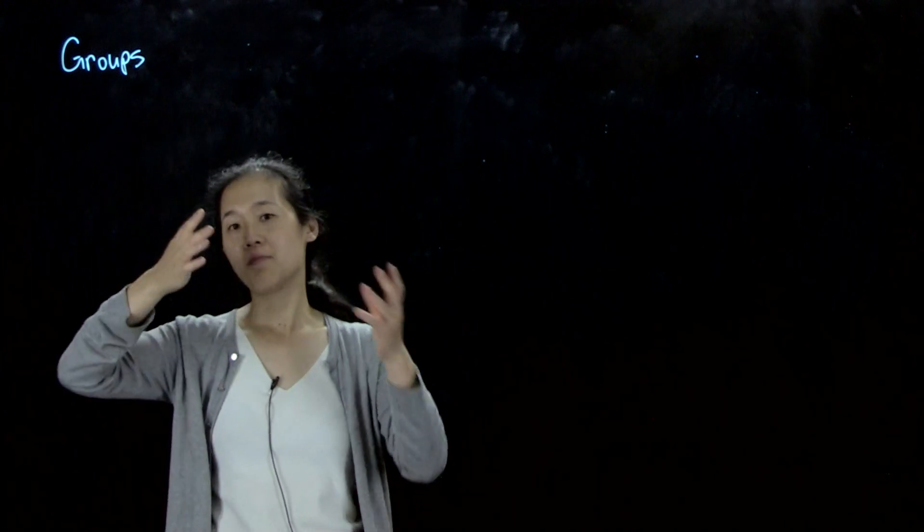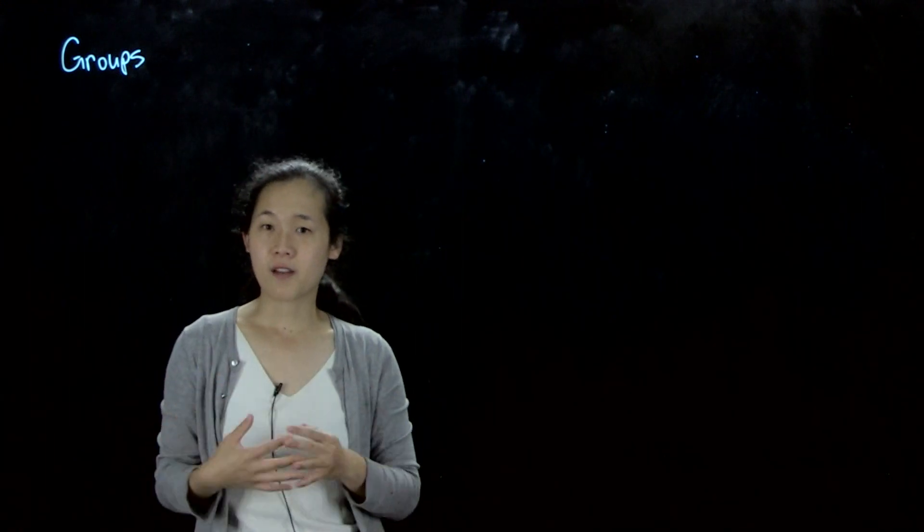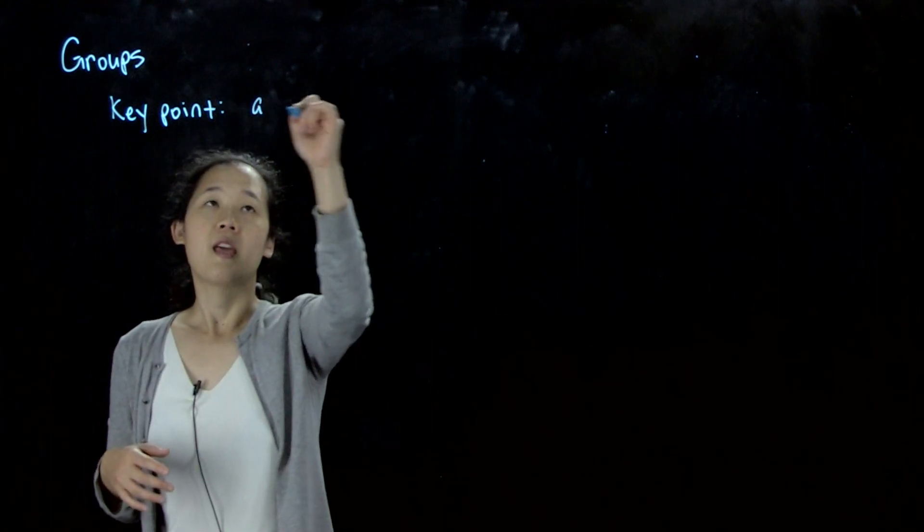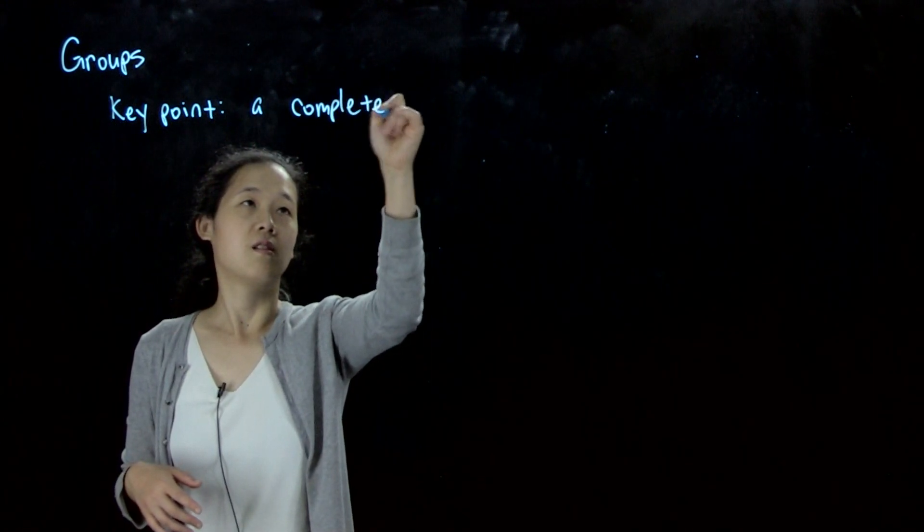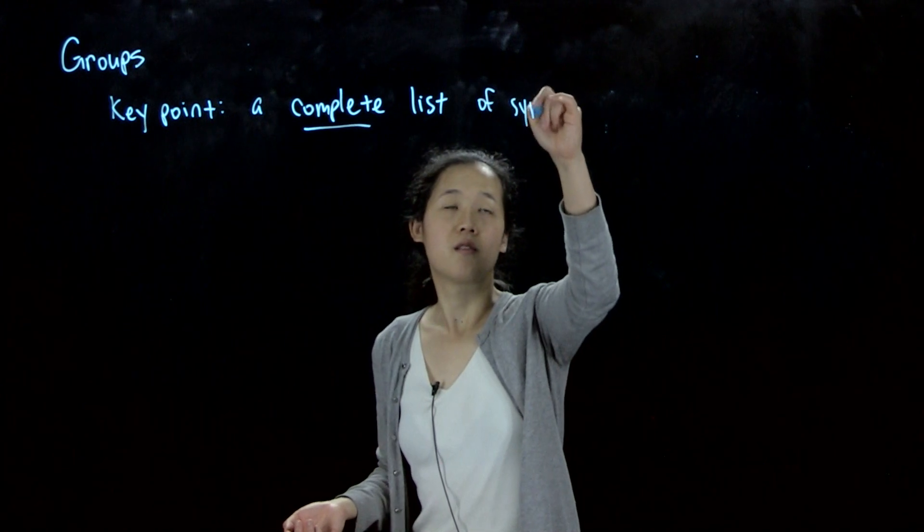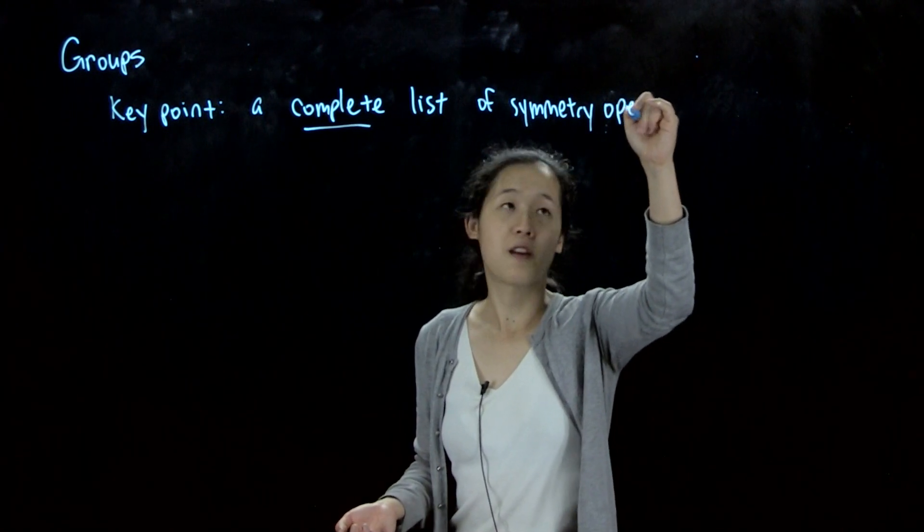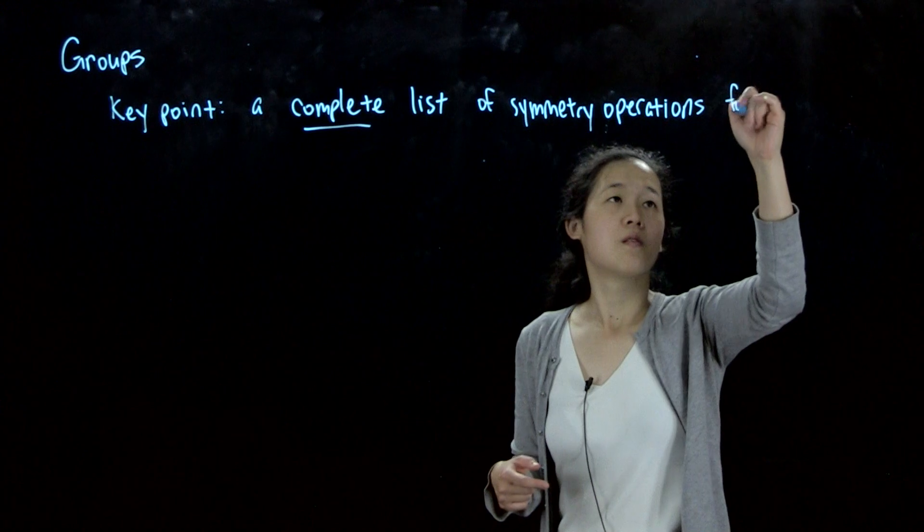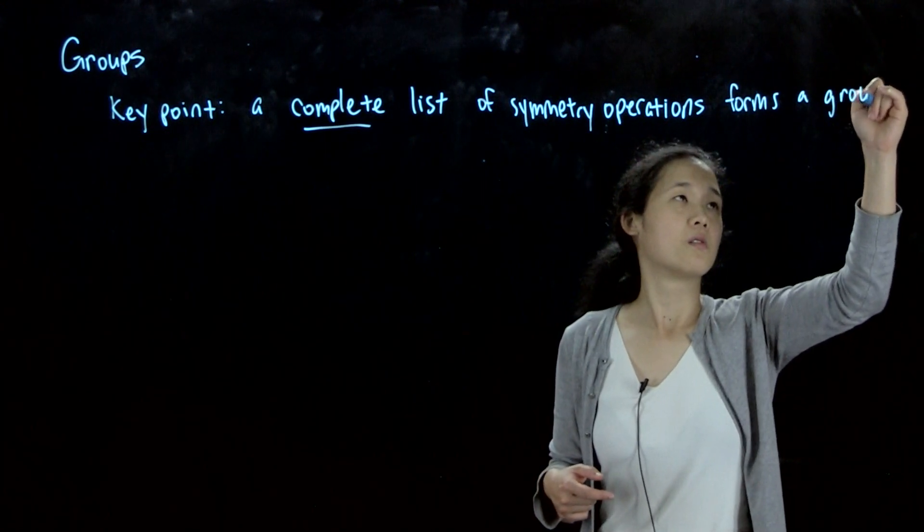Okay, so today we'll talk a little bit about groups. Groups is a mathematical concept, and what it means is it's a collection of some sort of elements, a group of elements, and they form a group if they follow a set of mathematical rules. The reason this is important for our class is that, so here's our key point. For any molecule, a complete list of its symmetry operations forms a mathematical group, and we'll talk a little bit about what that means.